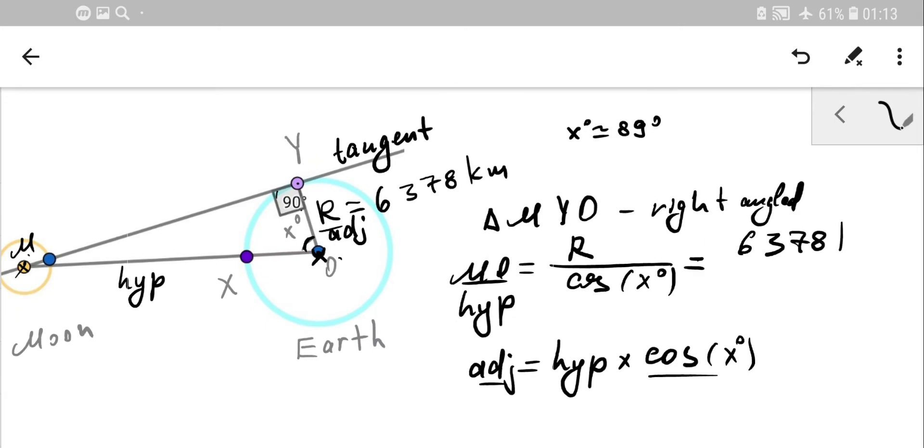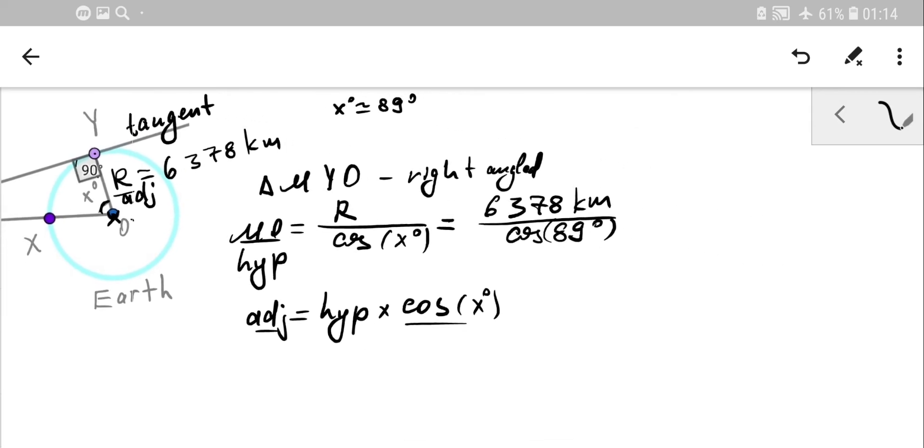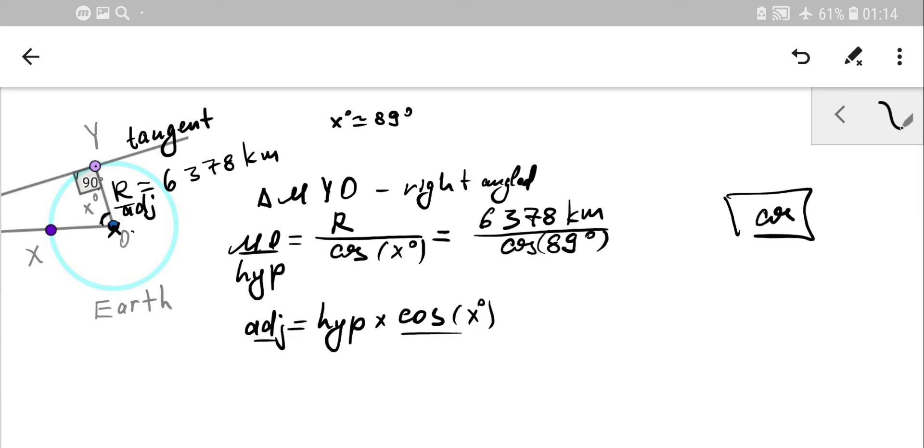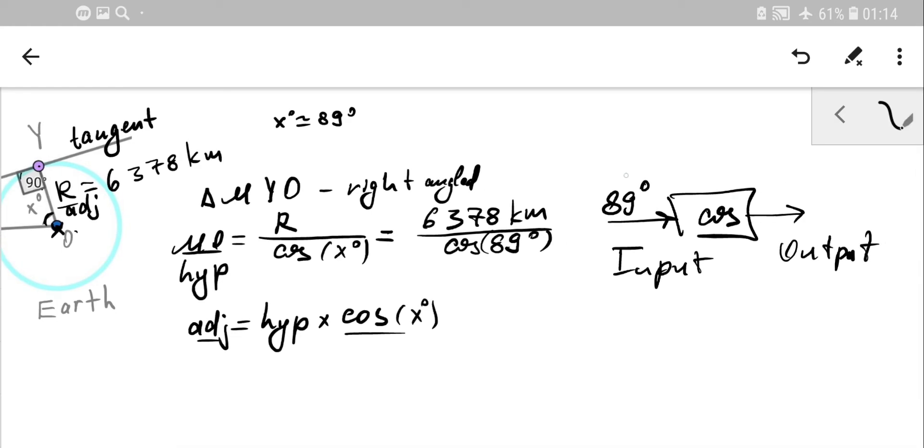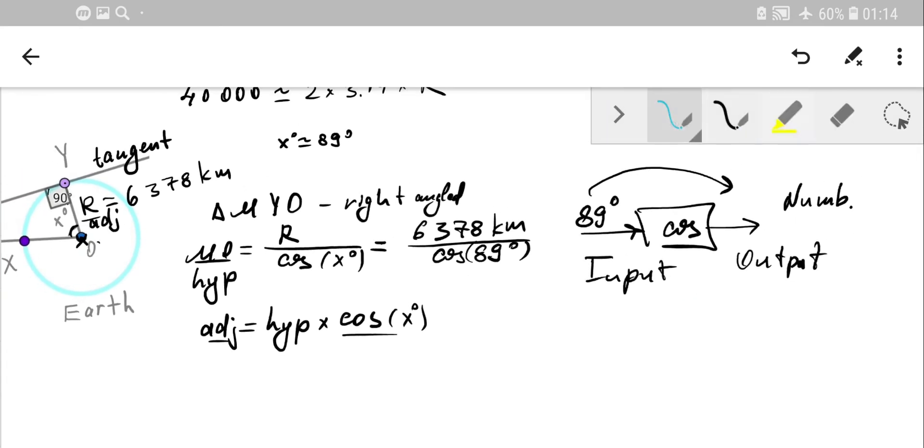We divide the radius by cos of angle x. Let's plug in the numbers: 6378 kilometers over cos(89°). Remember how the calculator works—press the cos button, input 89 degrees as the input, and you'll get a number as output. You'll get a very small number—the output is 0.01745.